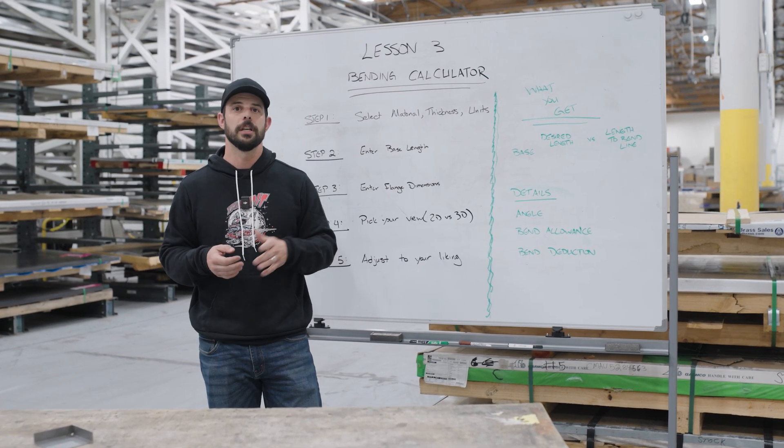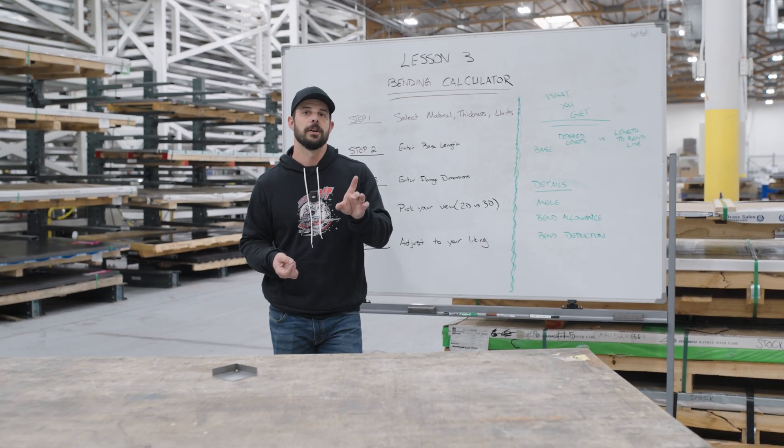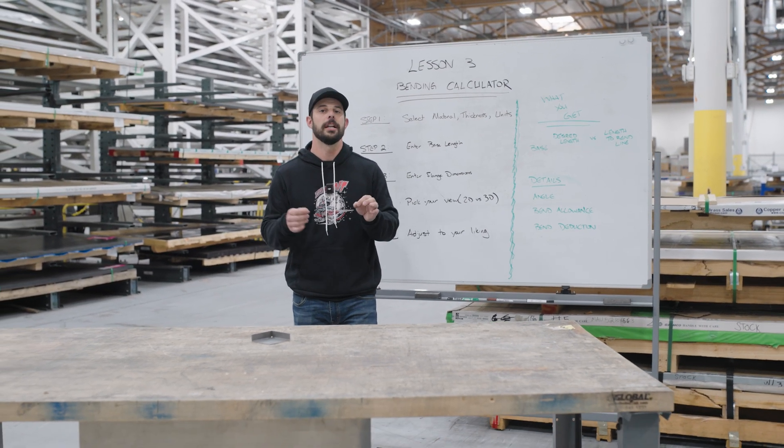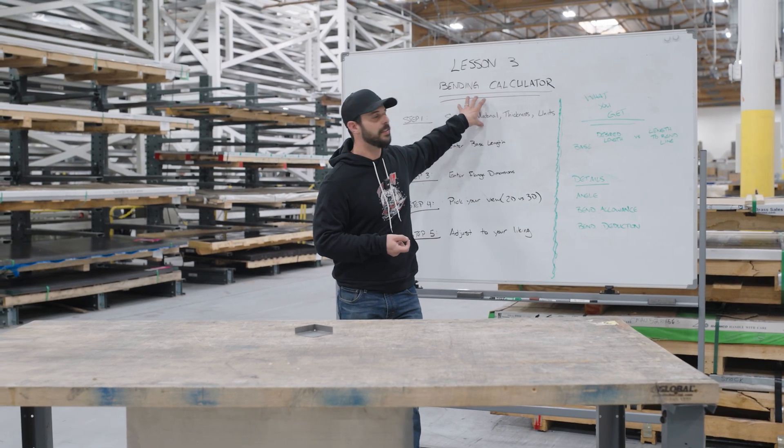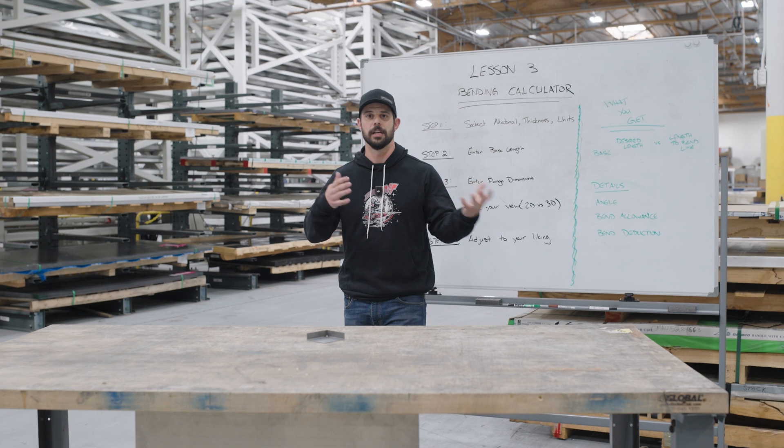So homework on this one is go ahead and watch video 2 again. Check out those bend allowance and bend deduction calculations and go ahead and do them yourself. And then put those values into the bend calculator on our website and check your work. You should be able to see those two things come out exactly the same.